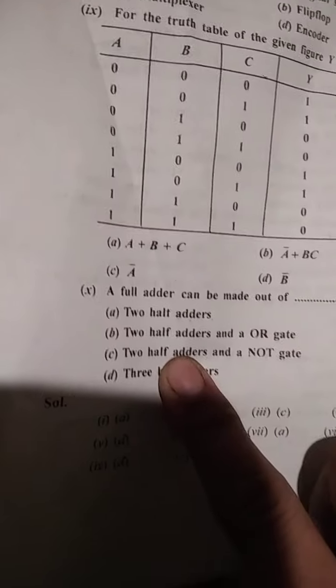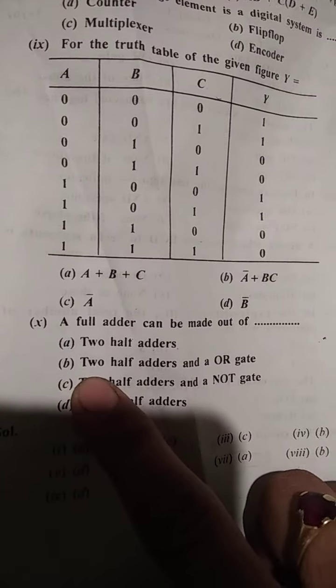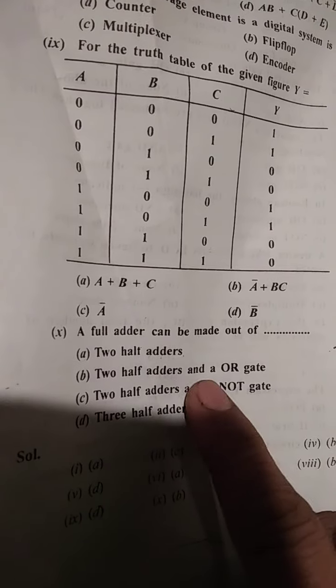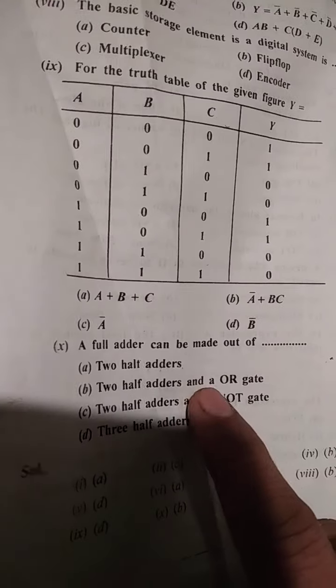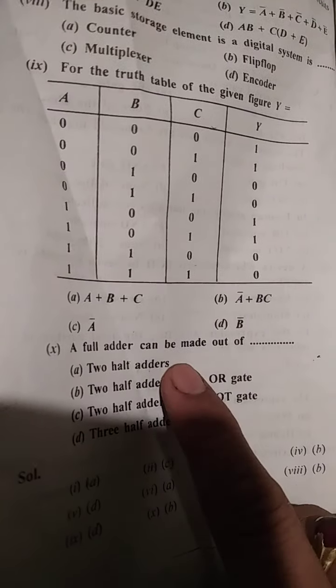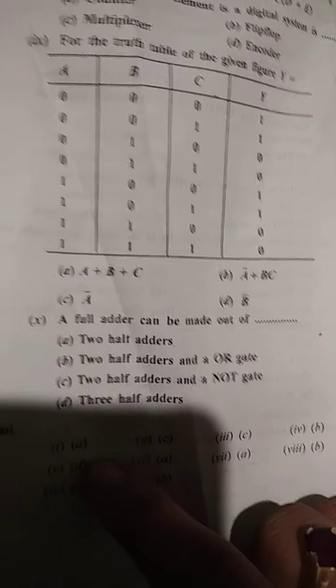The full adder can be made out of two half adders and an OR gate to make a full adder. So this is our ninth question, Group C.